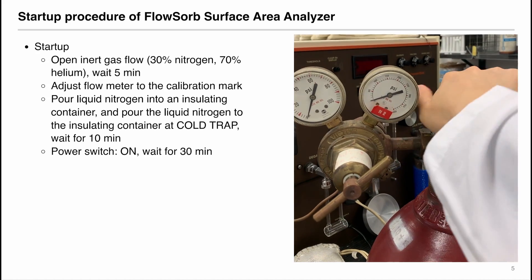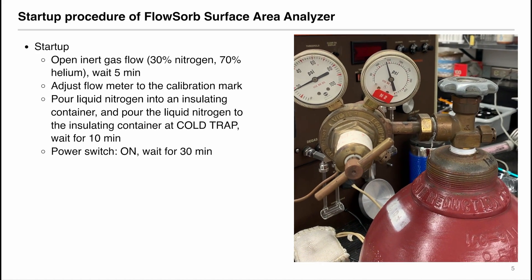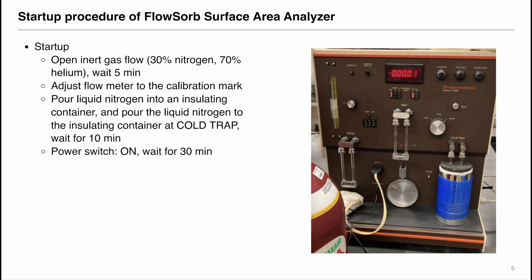When starting up the instrument, first open up the inert gas flow with 30% nitrogen and 70% helium. And then wait for 5 minutes before doing anything to the instrument itself. Once the inert gas flow has been established, we can then adjust the flow meter to the calibration mark. So here is the knob that we will be adjusting. We want the bead to be positioned at the calibration mark.